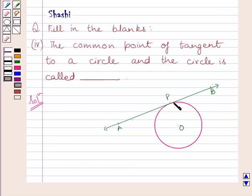So, our required answer is, the common point of tangent to a circle and the circle is called point of contact.